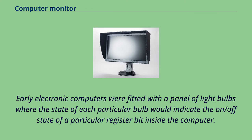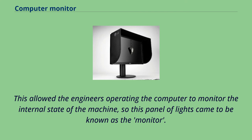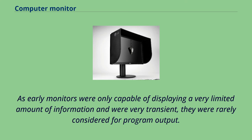Early electronic computers were fitted with a panel of light bulbs where the state of each particular bulb would indicate the on/off state of a particular register bit inside the computer. This allowed the engineers operating the computer to monitor the internal state of the machine, so this panel of lights came to be known as the monitor. As early monitors were only capable of displaying a very limited amount of information and were very transient, they were rarely considered for program output.